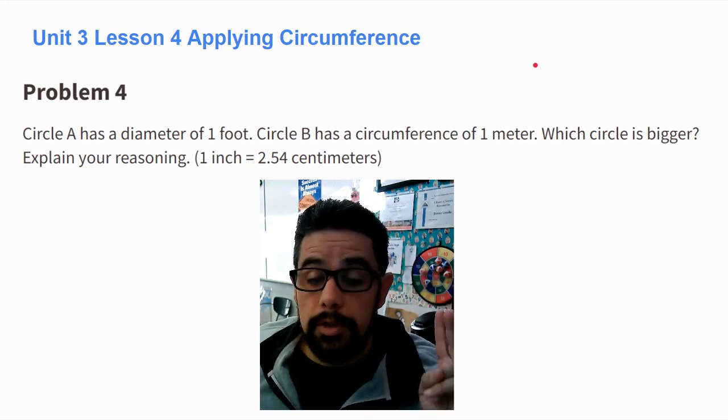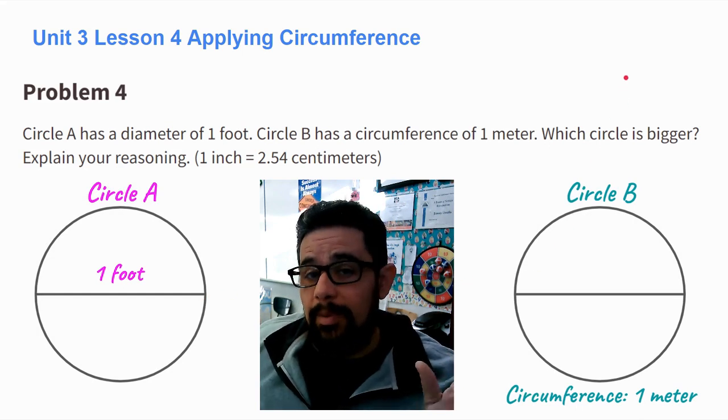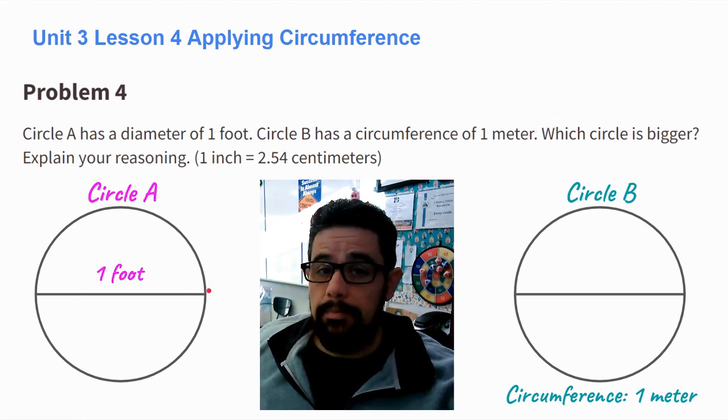So here we have two circles, circle A and circle B. The problem is interesting because we're given different measurements. In circle A, we have the diameter. And in circle B, we have the circumference.